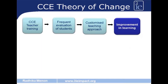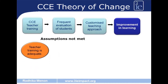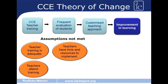Looking at the theory of change of the Continuous and Comprehensive Evaluation system: teachers receive training, they then frequently evaluate students, and based on this information they customize teaching approach, leading to improvement in learning. However, some fundamental assumptions were not met in this case — teacher training being adequate, which was not true; teachers attending training, with data showing only around 75% attended; and teachers having the time and resources to implement the program, as they were expected to implement new CCE techniques during school hours and were not equipped with pedagogical tools.